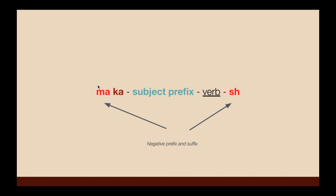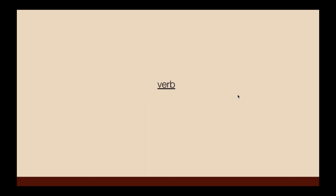For the negative, we add 'ma' at the very beginning of the verb and 'sh' at the very end. So the structure is: ma + ka + subject prefix + verb + sh. For example: verb, ka-verb, I-verb become ma-ka-verb-sh.